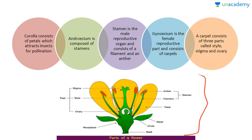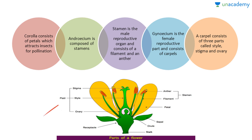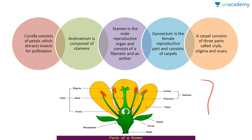Gynoecium is the female reproductive part and consists of carpels or pistil. A carpel consists of three parts: style, stigma, and ovary. Please learn this figure in detail.